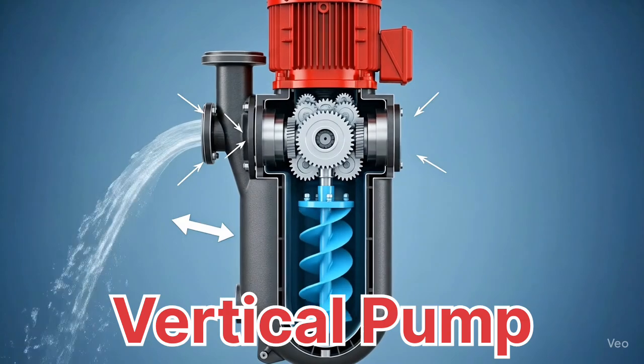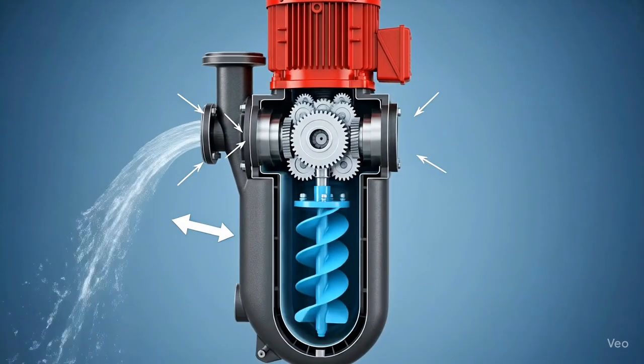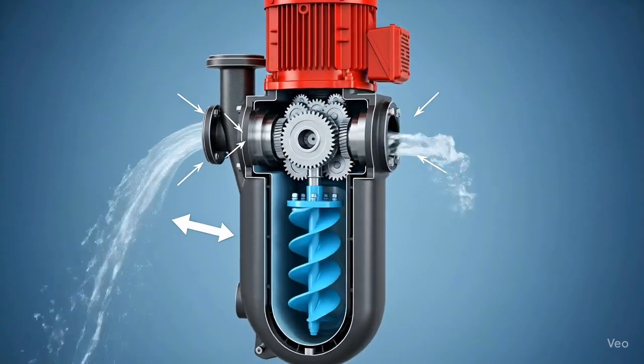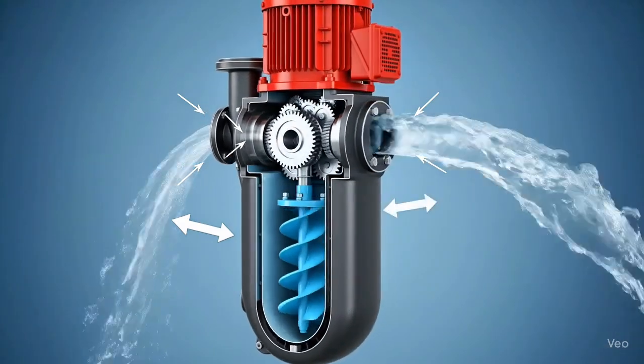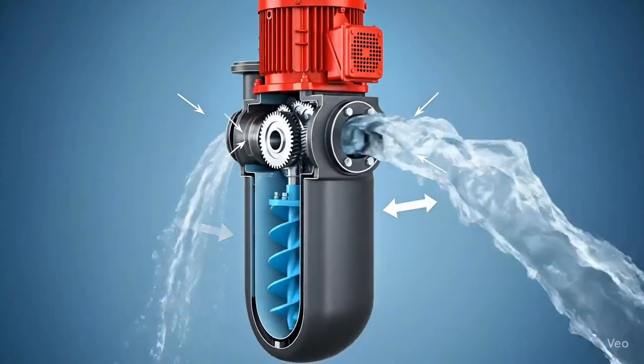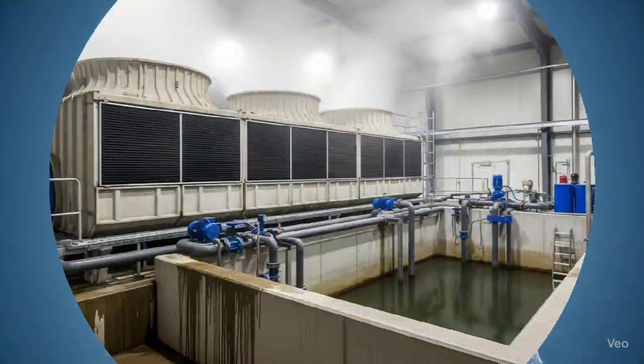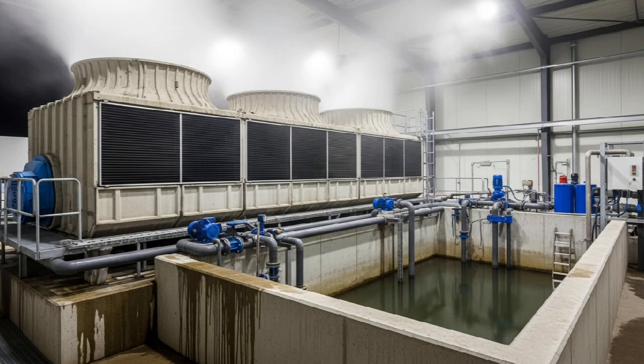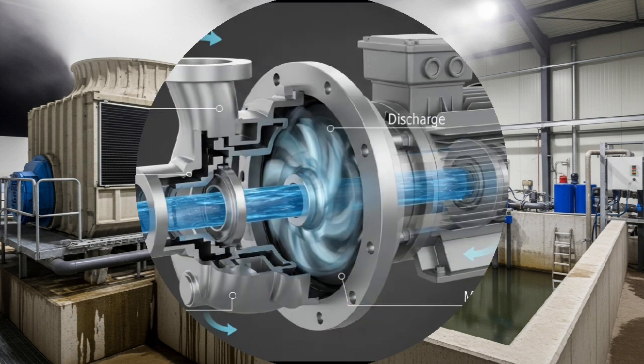Let's look at vertical pumps. The motor and shaft are positioned vertically. Usually installed inside a sump or tank. Requires less floor space but more headroom. Many times, no priming is needed because the pump is submerged in liquid.